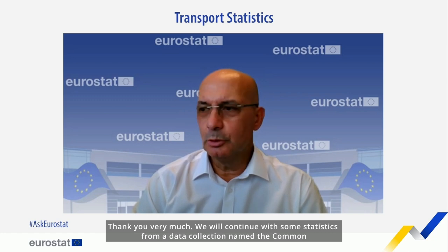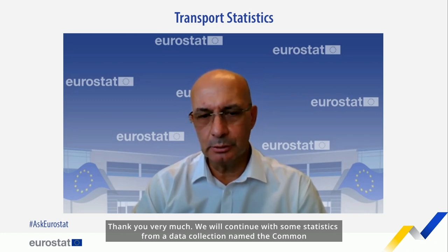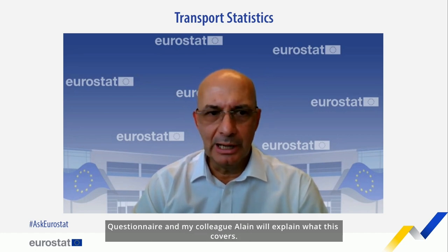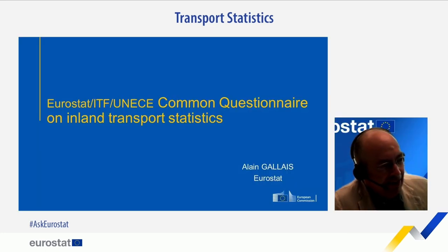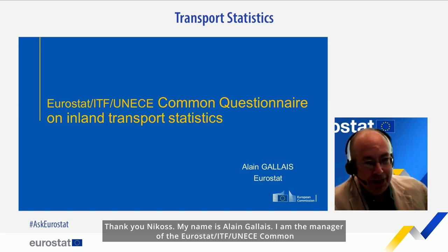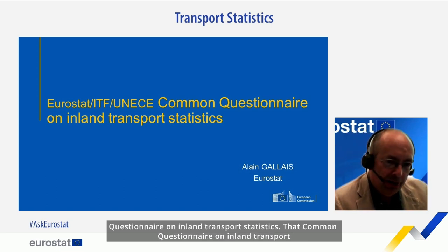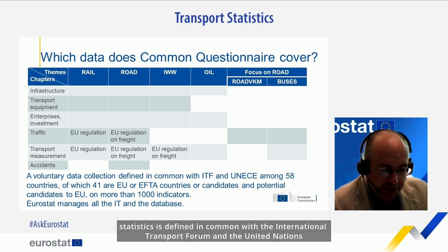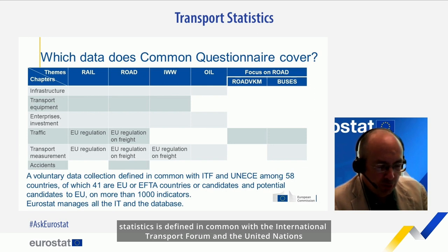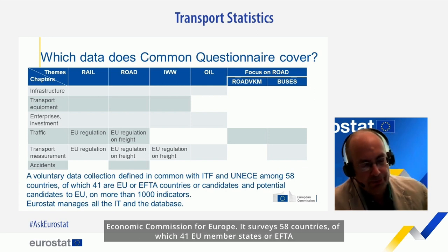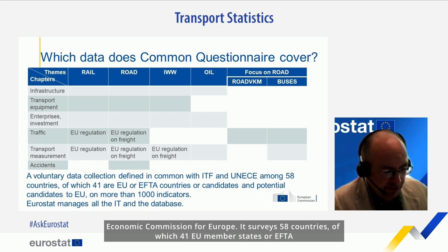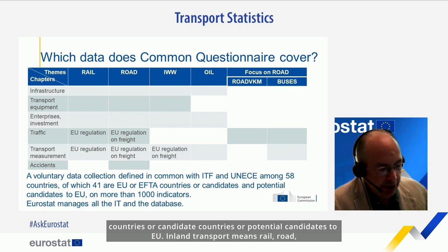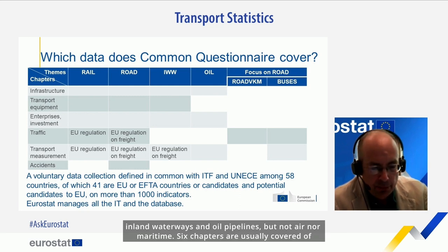Thank you. We will continue with some statistics from a data collection named the Common Questionnaire, and my colleague Alain will explain what this covers. Thank you, Nikos. My name is Alain Gallet, I am the manager of the Eurostat ITF UNECE Common Questionnaire on Inland Transport Statistics. The Common Questionnaire on Inland Transport Statistics is defined in common with the International Transport Forum and the United Nations Economic Commission for Europe. It surveys 58 countries, of which 41 are EU member states, EFTA countries, candidate countries, or potential candidates to the EU. Inland transport means rail, road, inland waterways and oil pipelines — but not air nor maritime.